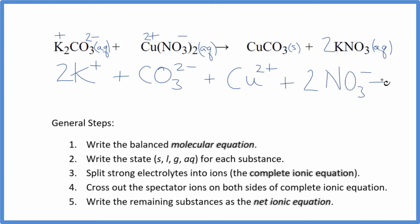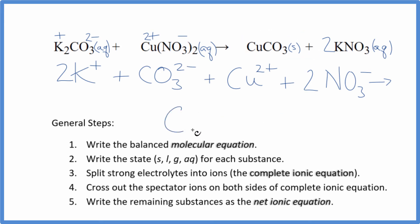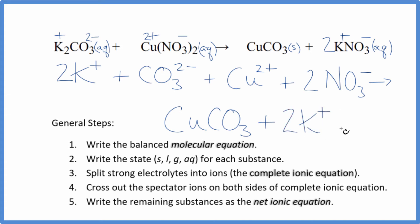These are the reactants in the complete ionic equation. For the products, we don't split solids apart in the net ionic equation, so we just write this copper 2 carbonate — we keep it together. Then we have two potassium ions, just like the reactants, plus two nitrate ions, also like the reactants. So this is the complete ionic equation.